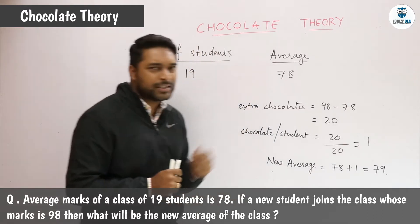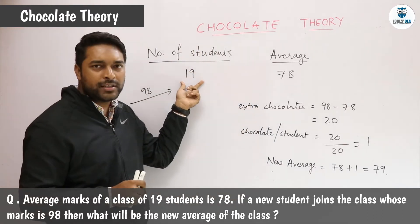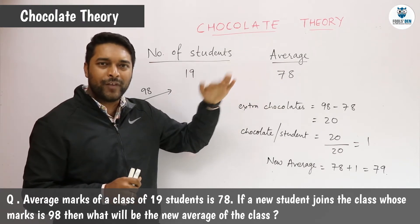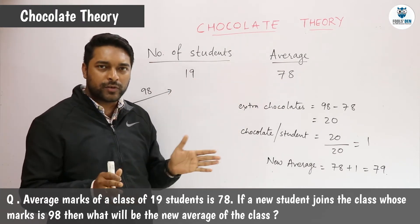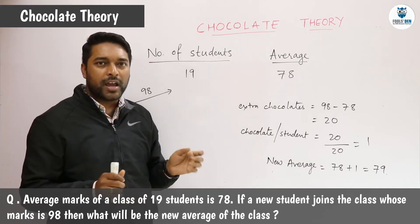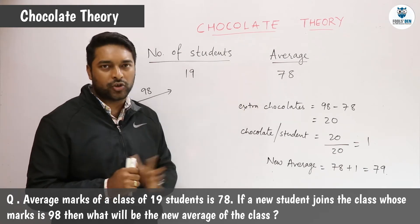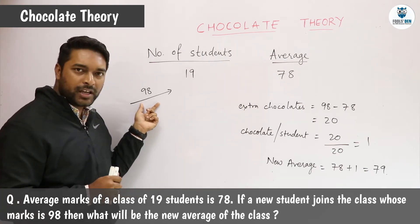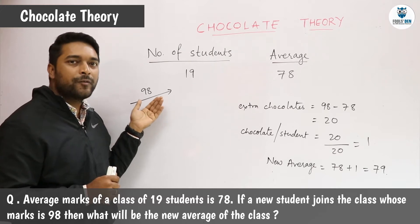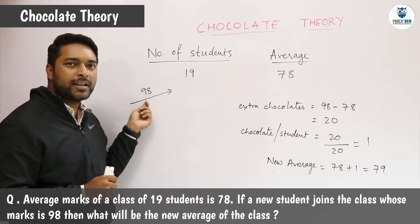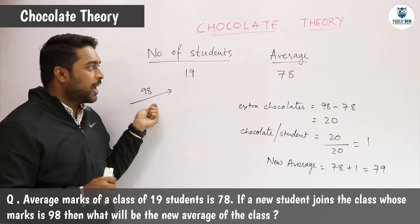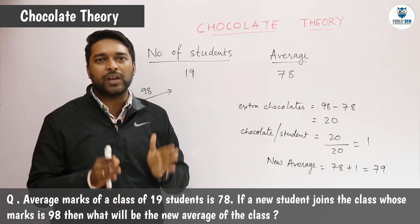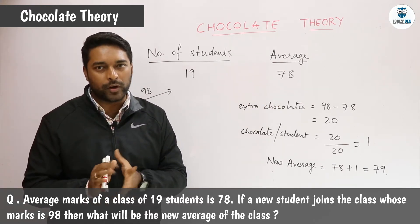The question states that there are 19 students and their average marks is 78. That means we will consider that there are 19 students in a class and each of them has 78 chocolates. Now a new student comes with 98 marks, meaning he has 98 chocolates. Again we have to find the average, so we have to distribute the chocolates equally.